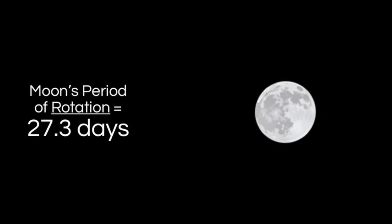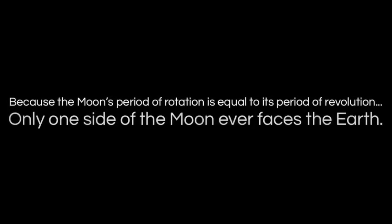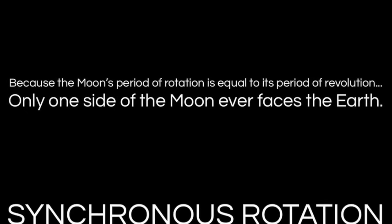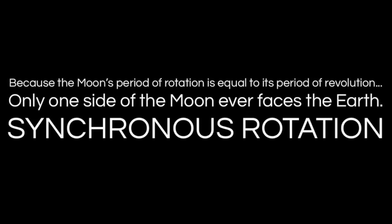In one of the very strange cosmic coincidences, the moon's period of rotation is exactly the same as its period of revolution — 27.3 days. Because the moon takes the same amount of time to spin as it does to orbit the Earth, we from Earth only ever see one face of the moon. We are never able to see the far side of the moon, and this is called synchronous rotation.